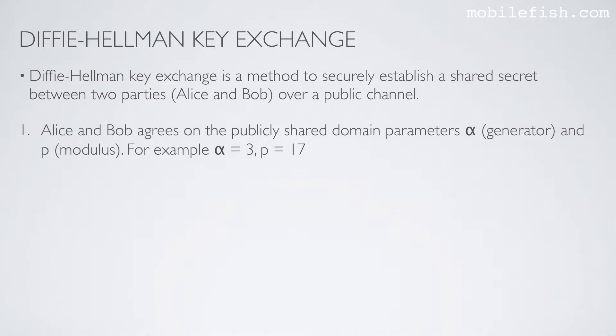Step 1. Alice and Bob agree on the publicly shared domain parameters: alpha, which is a generator, and p, which is the modulus. For example, alpha is 3 and p is 17.